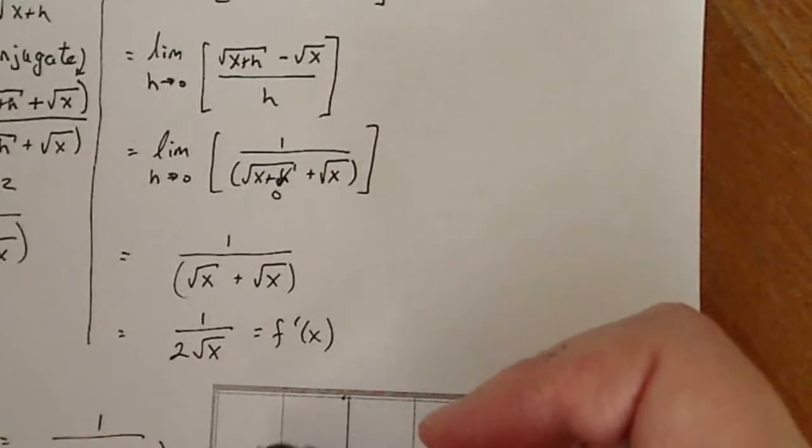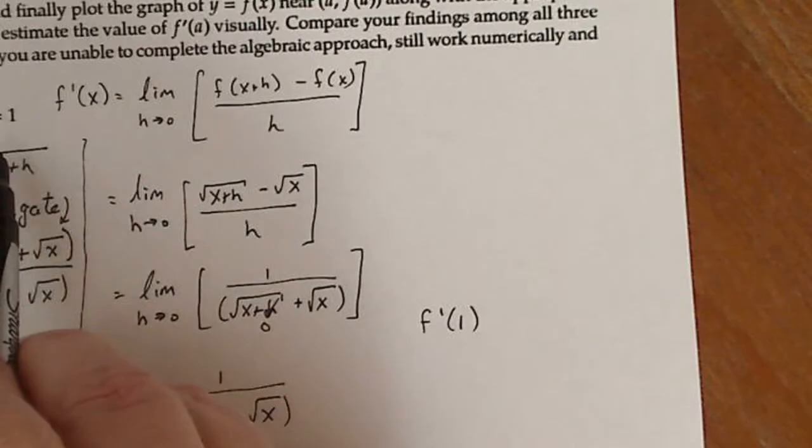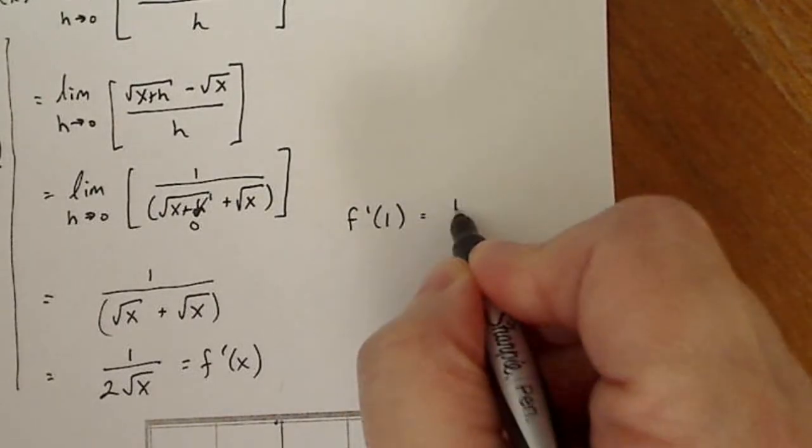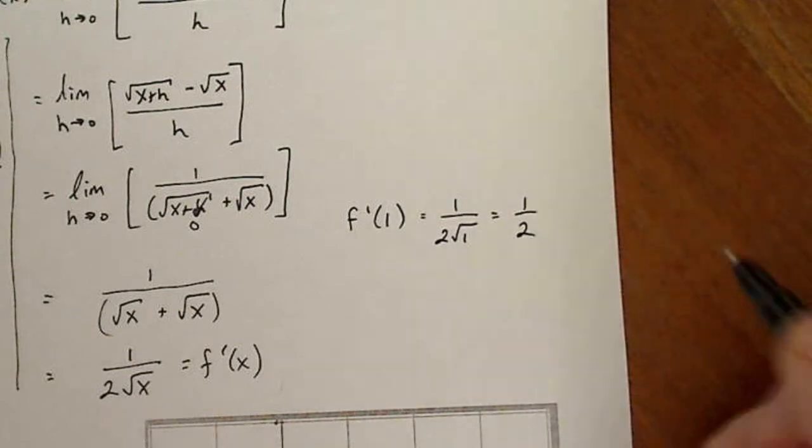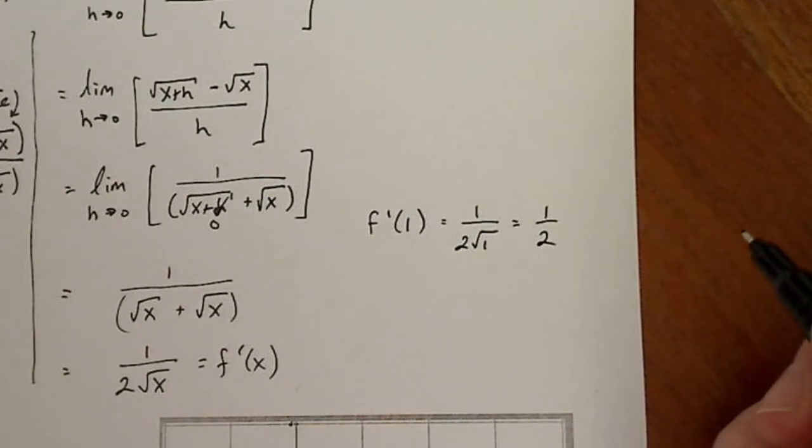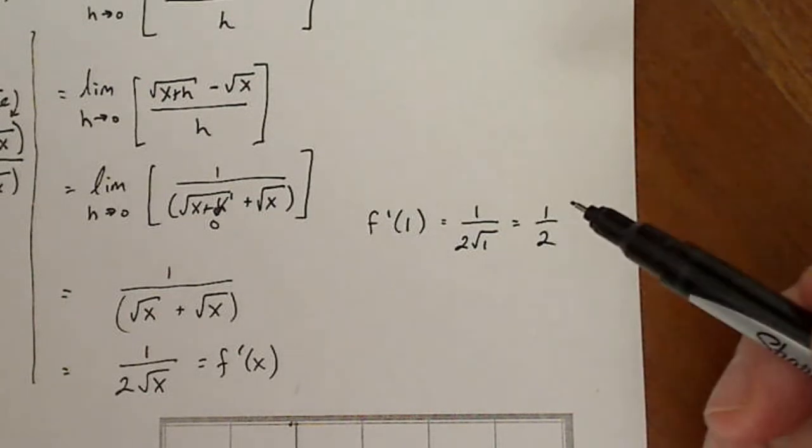Now let's calculate f prime at one, which is what the question is asking you to do. So that should be one over two times square root of one, which is one over two. So f prime of one is one over two, one half slope of the tangent line at one is one half.